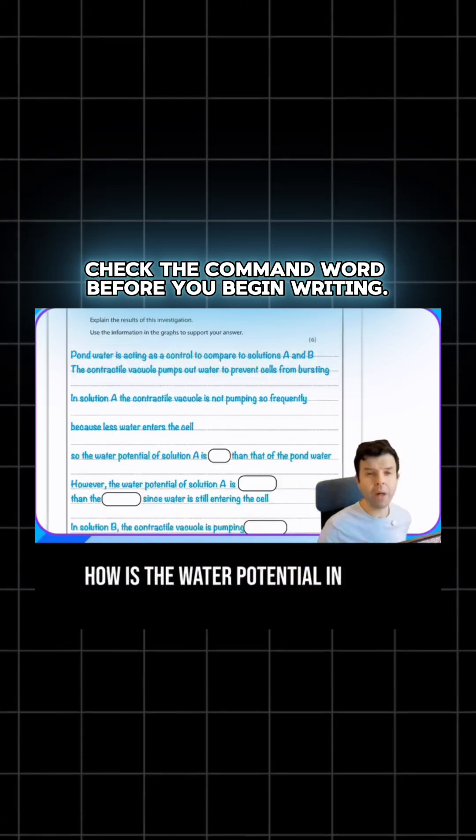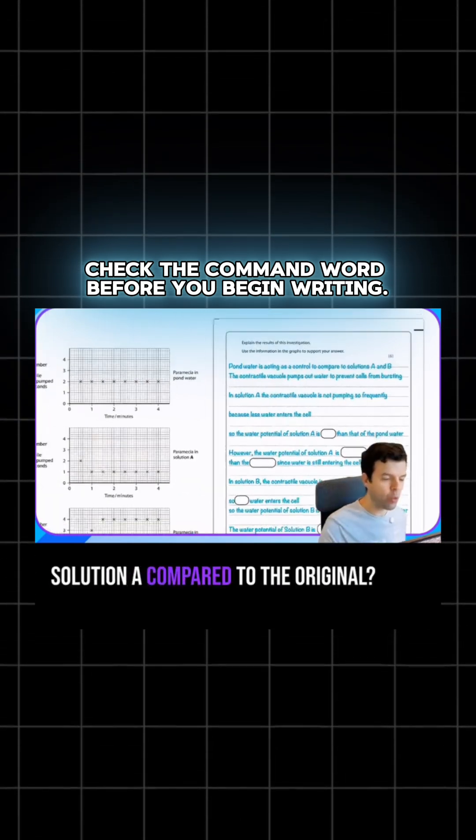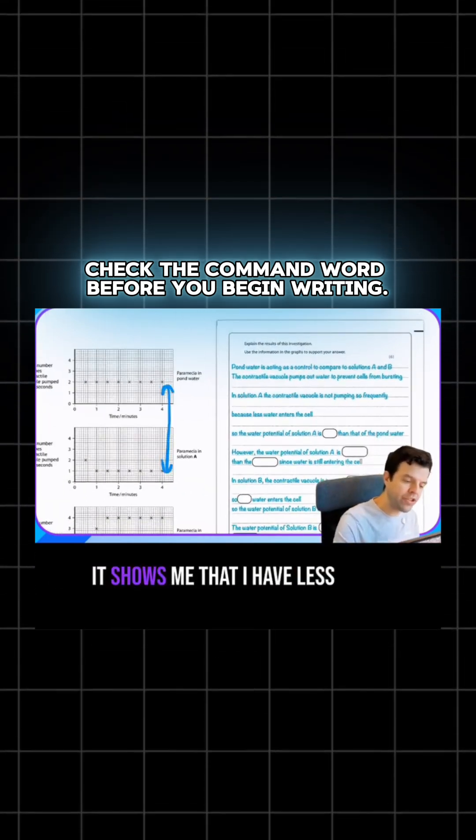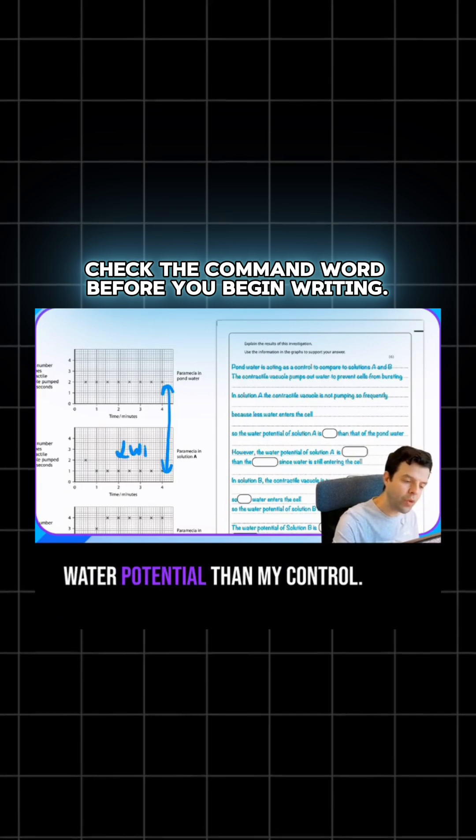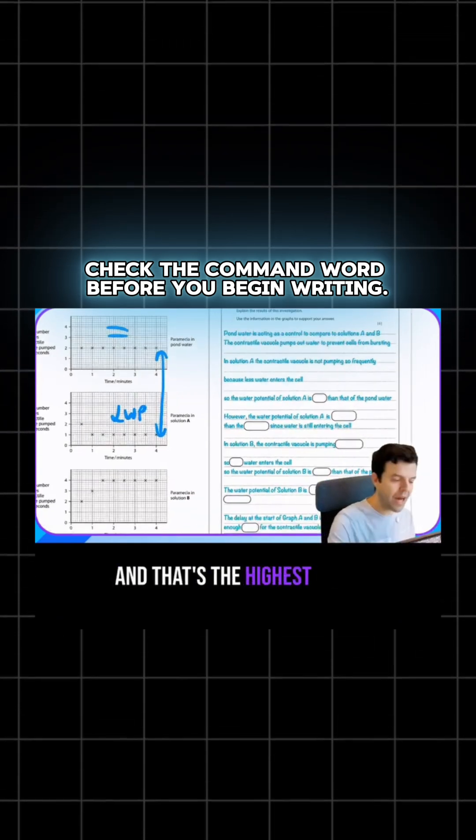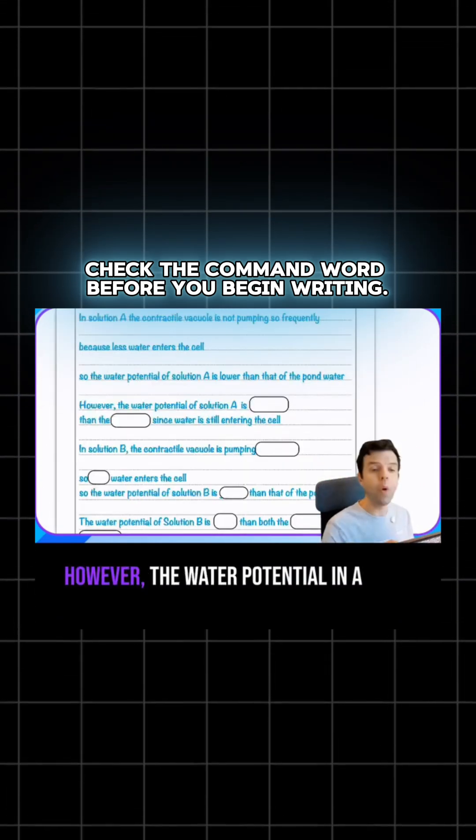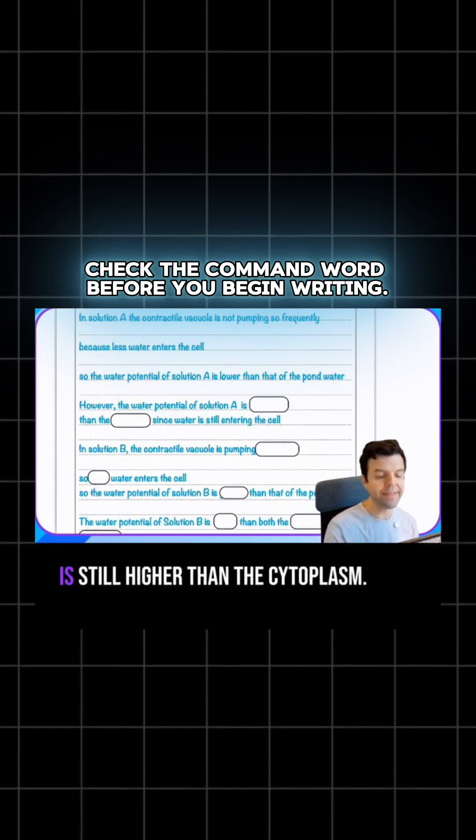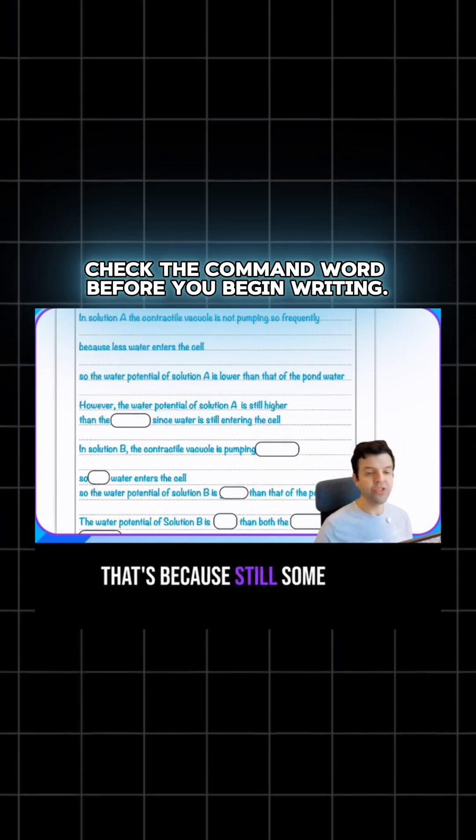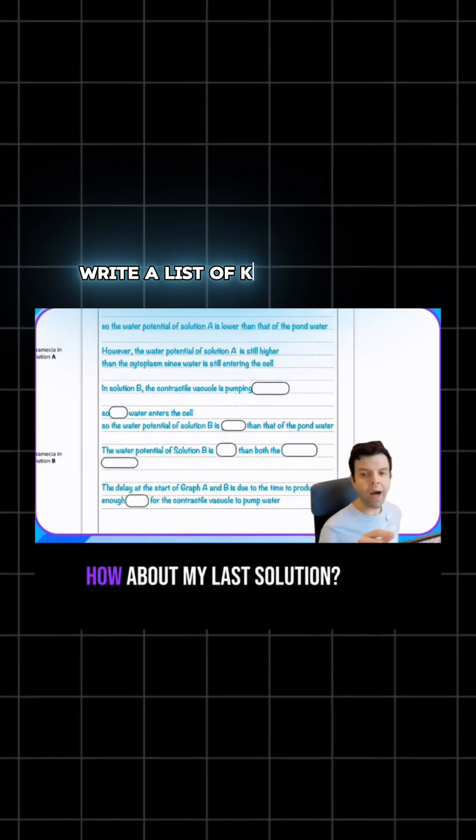How is the water potential in solution A compared to the original? It shows me that I have less water potential than my control. However, the water potential in A is still higher than the cytoplasm. That's because some water is still getting into the cell.